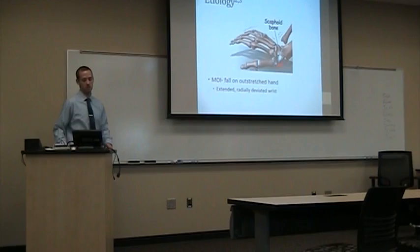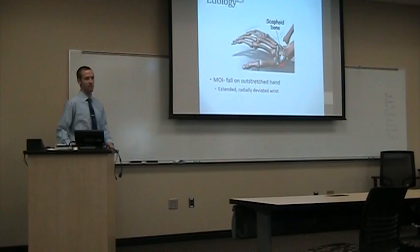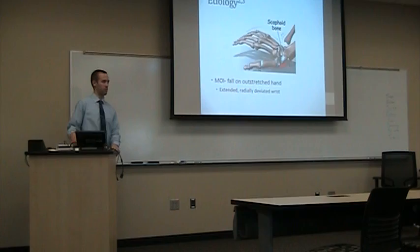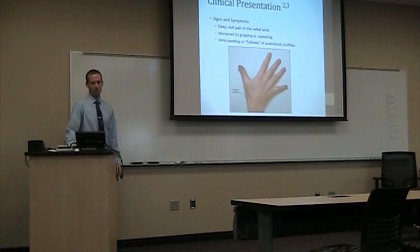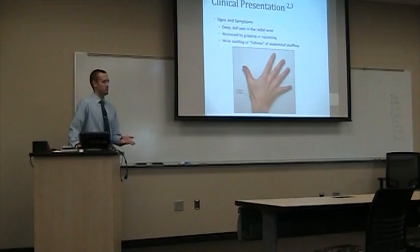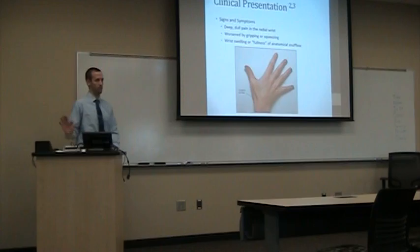So etiology — the scaphoid bone is at high risk. The biggest mechanism of injury is falling on an outstretched hand, or FOOSH. The scaphoid is most prone to injury when the wrist is in extension and radially deviated. This has the highest risk. Ninety-seven percent of scaphoid fractures occur with this extension landing; only three percent occur with a flexion landing.